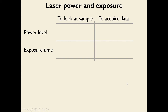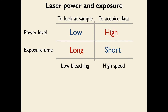One other thing to keep in mind is how to balance laser power and exposure. When looking at the sample, you can use low laser power and long exposure time — as long as the exposure allows a reasonable refresh rate, you will be able to look at things comfortably with low bleaching. But to acquire data over very large samples, you want to go as fast as possible, so flip these: use very high laser power and very short exposure time. This allows you to go as fast as possible and get all that data in the minimal amount of time.